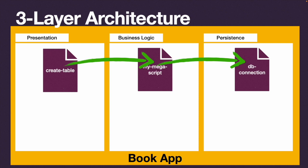The presentation layer can only ever call the business logic layer - it must never call the persistence layer directly. Whenever a user initiates something from the user interface, the UI calls the business logic layer. The business logic layer figures out what data it needs and gets it from the persistence layer. The data is returned to business logic, possibly manipulated or formatted, before being sent back to the presentation layer where it's shown to the user.